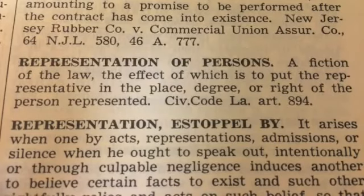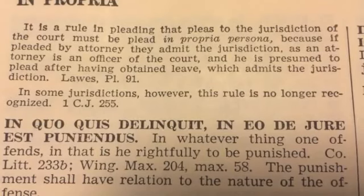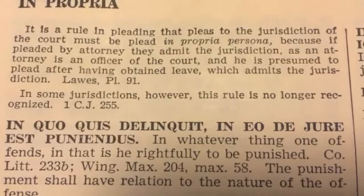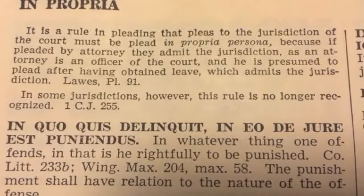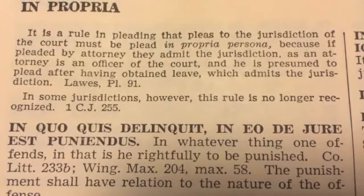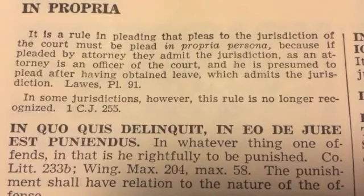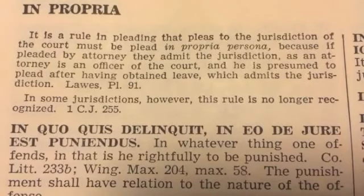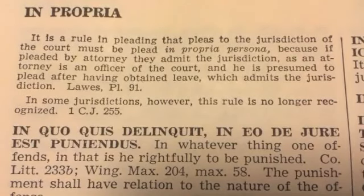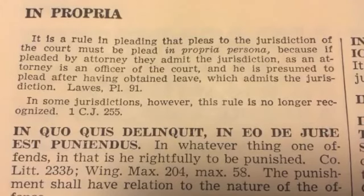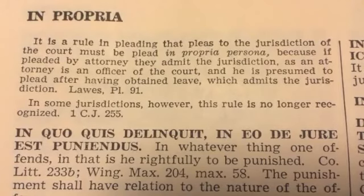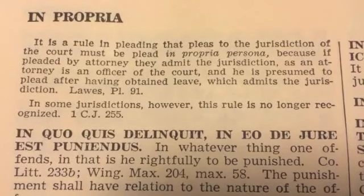In propria persona — this is the way I would go to court. It is a rule in pleading that pleas to the jurisdiction of the court must be pled in propria persona, because if pleaded by an attorney, they admit the jurisdiction, as an attorney is an officer of the court and is presumed to plead after having obtained leave, which admits the jurisdiction. Right there, they're telling you: if you get an attorney, the attorney goes ahead and gives jurisdiction to the court.